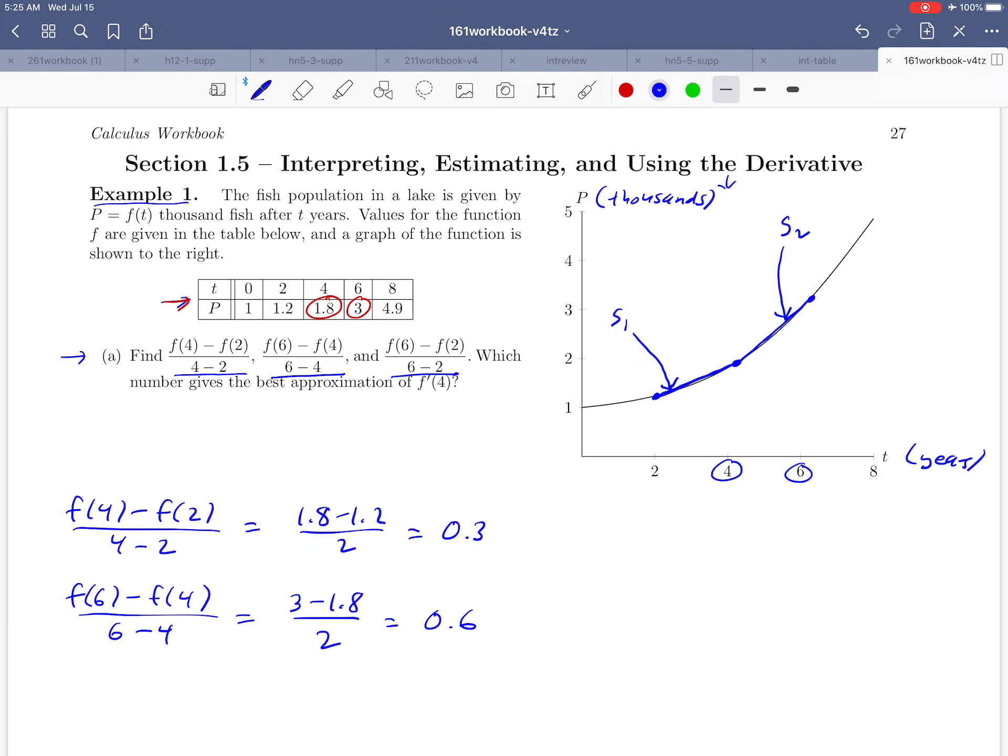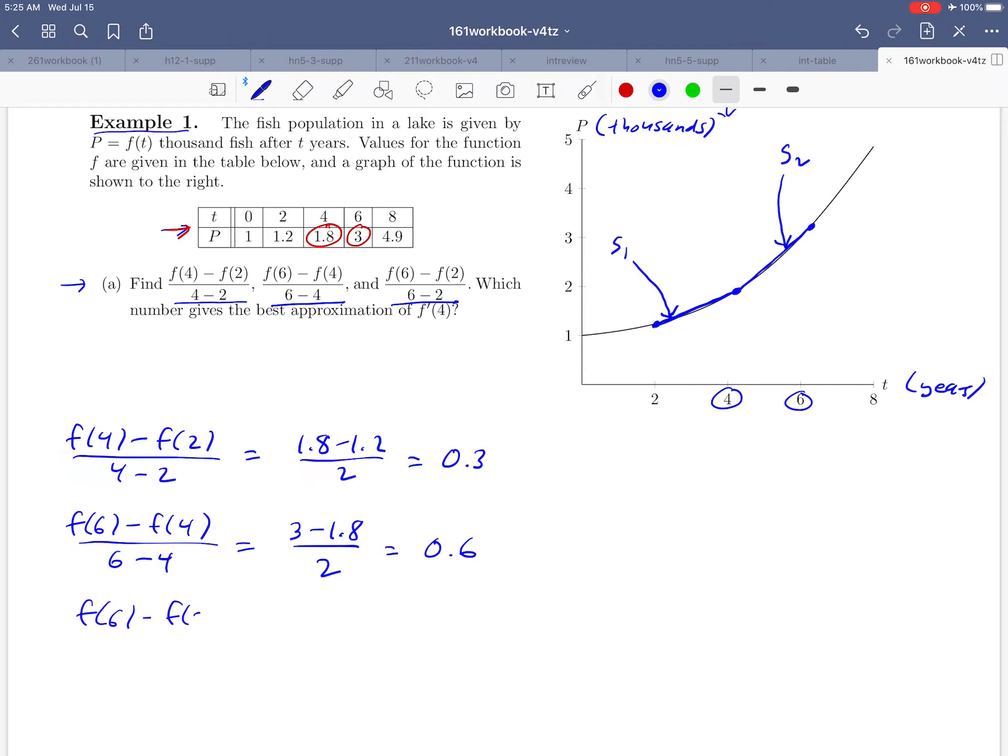And then finally we come to f of 6 minus f of 2 over 6 minus 2. f of 6 and f of 2 are 3 and 1.2 looking up at our table here. So we're going to get 3 minus 1.2 over 4. And if we do that calculation, we get 0.45. And that line would be the secant line that goes between 2 and 6, so points here and here. I'm going to draw this line in green just to help us tell these apart. So it would look like that. And I'll call that line S3.